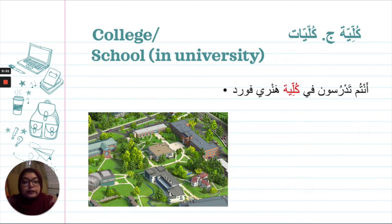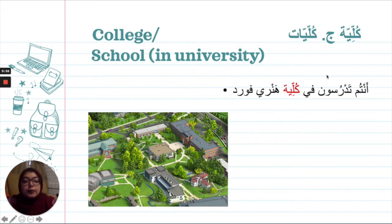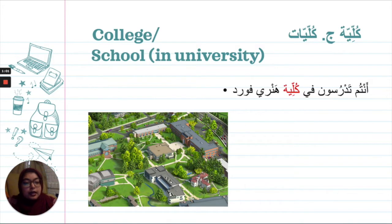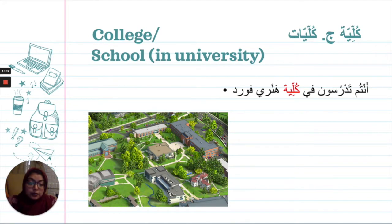Before we jump into a subject — كُلِّيَّة. Remember we have this ج (jeem). Last chapter we started doing this: we have المفرد, the singular, and then you have ج, which means الجمع — the plural. So the word after ج is going to be plural.